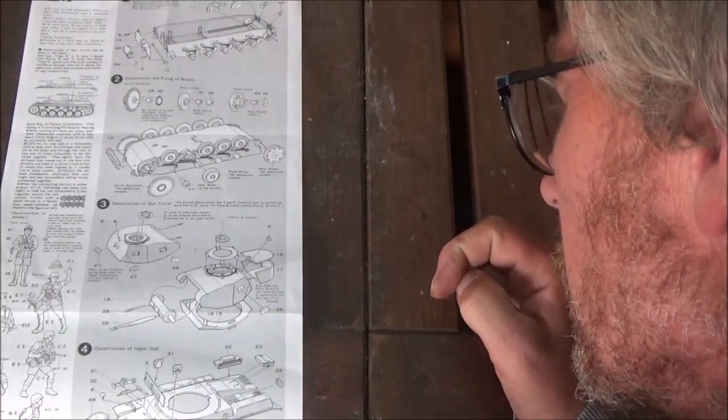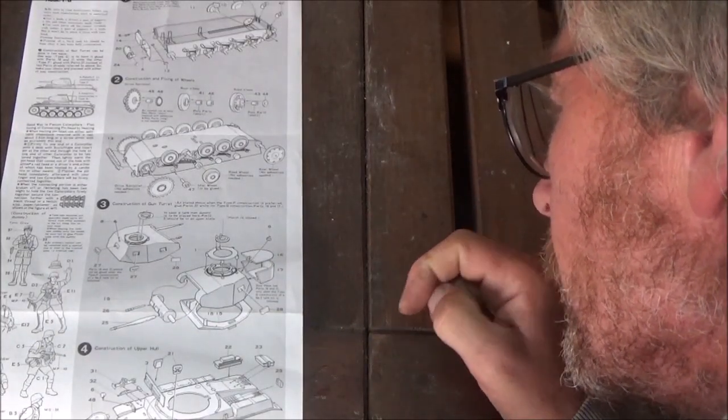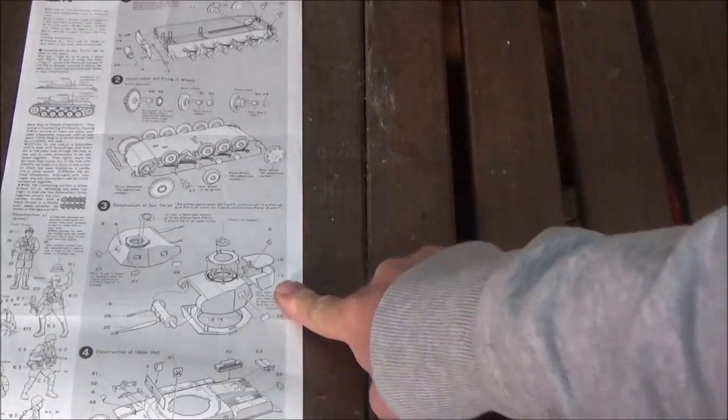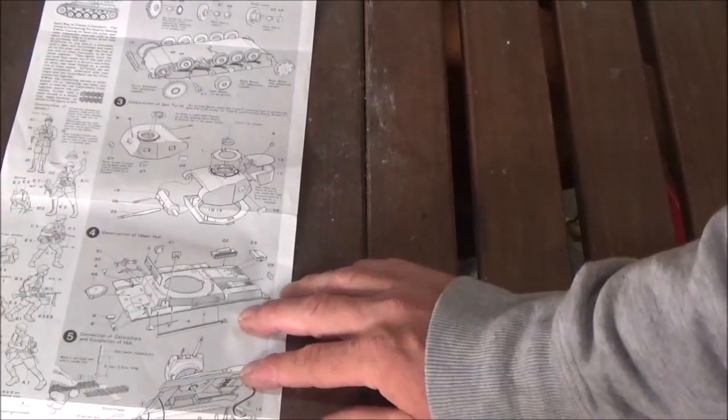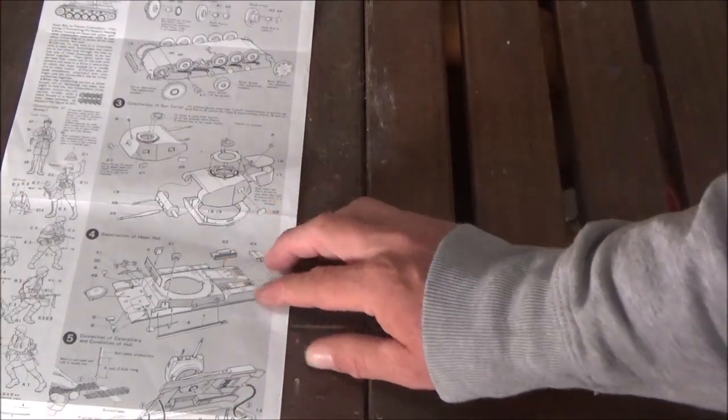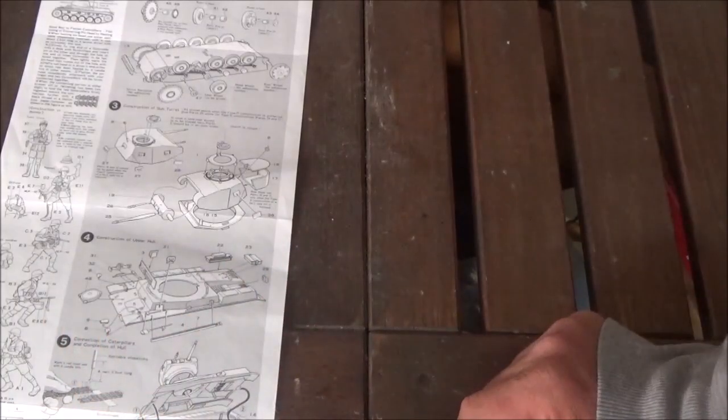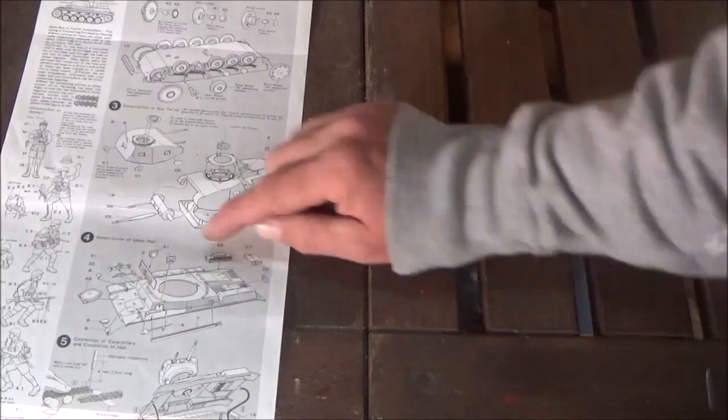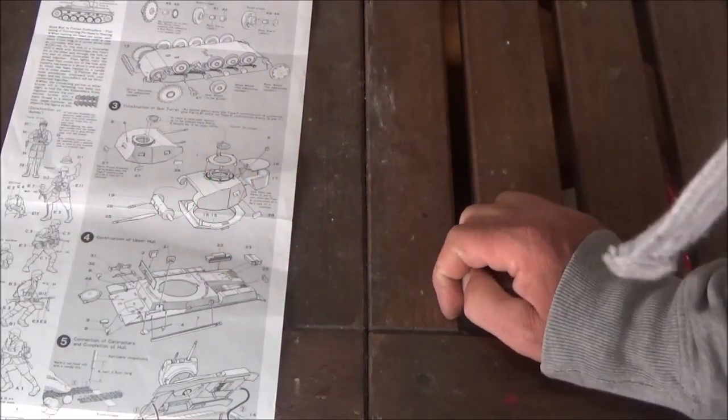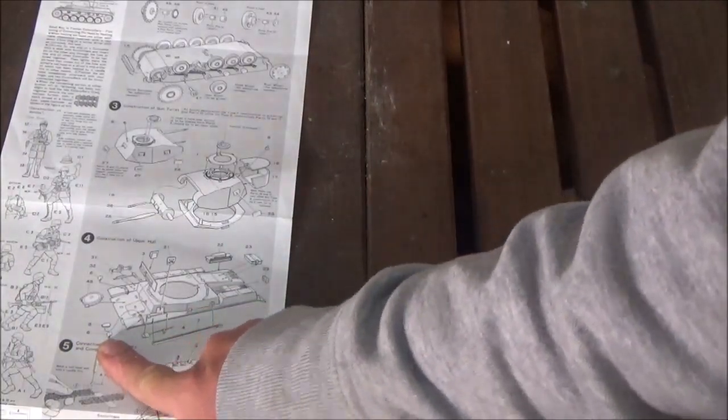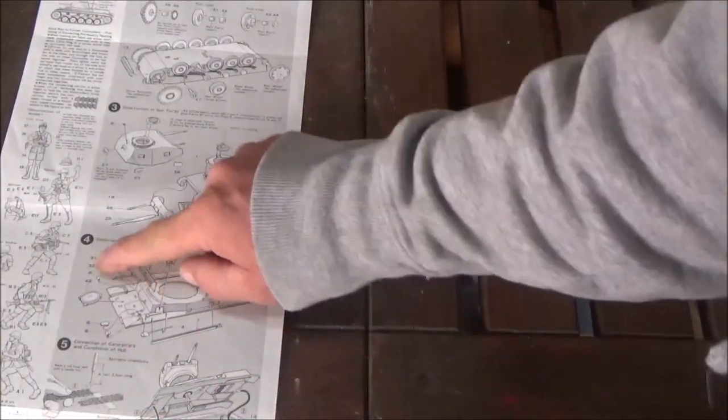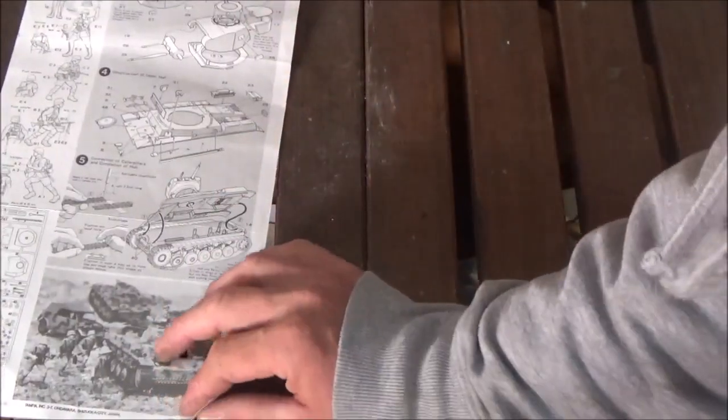Then here we're working on the top of the hull. We have our boxes here, some stowage boxes, extra road wheel here on the front, the jack, a couple more of these little windows, some pioneering tools, and the headlights.